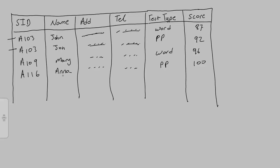For example if he was doing an Excel test we'd have another entry with the student ID, name, address, and telephone number repeated. If this was a school database there'd be a lot more fields. Every time we record a score we're duplicating that data many times. This is what we want to avoid, because if we keep duplicating data the database can get very big very quickly, making it slower to load, run, and search.